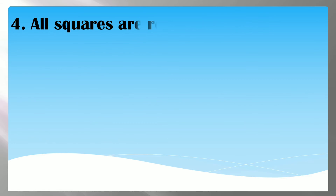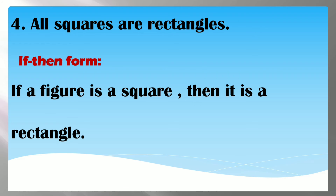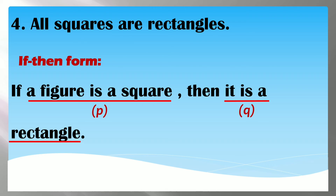For number 4: 'All squares are rectangles' — we are talking about squares, which are shapes or figures. We can use the word 'figure' to construct the if-then form: 'If a figure is a square, then it is a rectangle.' Our hypothesis is 'a figure is a square' and our conclusion is 'it is a rectangle.' When it's in if-then form it's much easier to determine the hypothesis and conclusion.